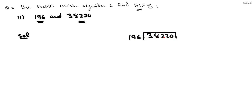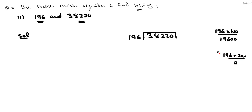This is a large number, 38220. Let's do the calculations. If we try 196 multiplied by 200, that gives 39200, which is larger. So let's try 196 multiplied by 195. Two sixes is twelve, carry one; two nines is eighteen plus one is nineteen, carry one; two ones is two plus one is three — giving us 38220. So 196 multiplied by 195 gives 38220.